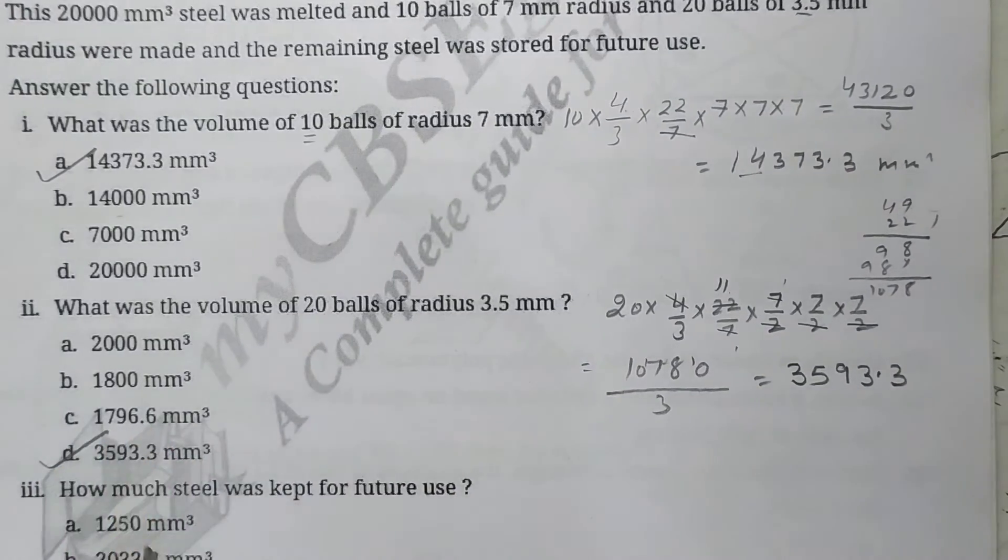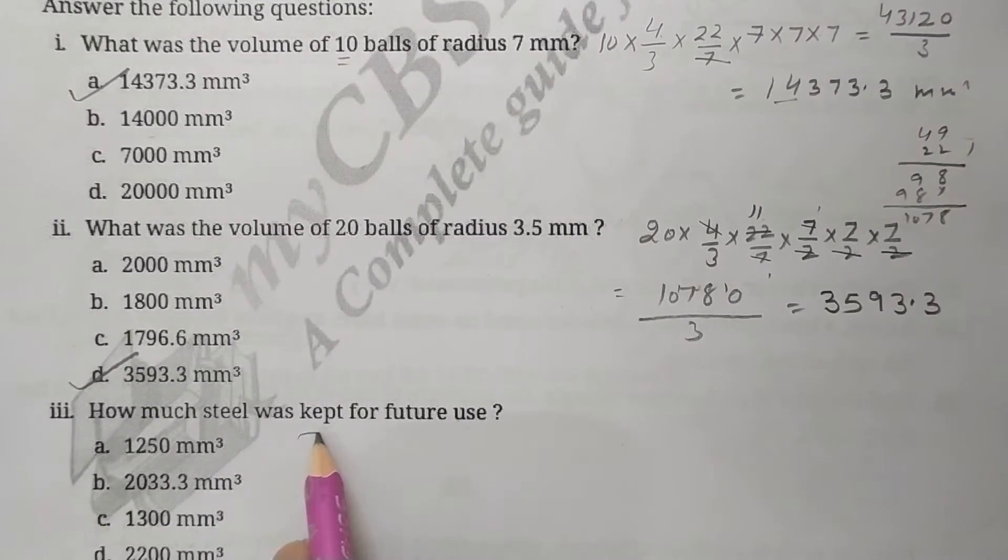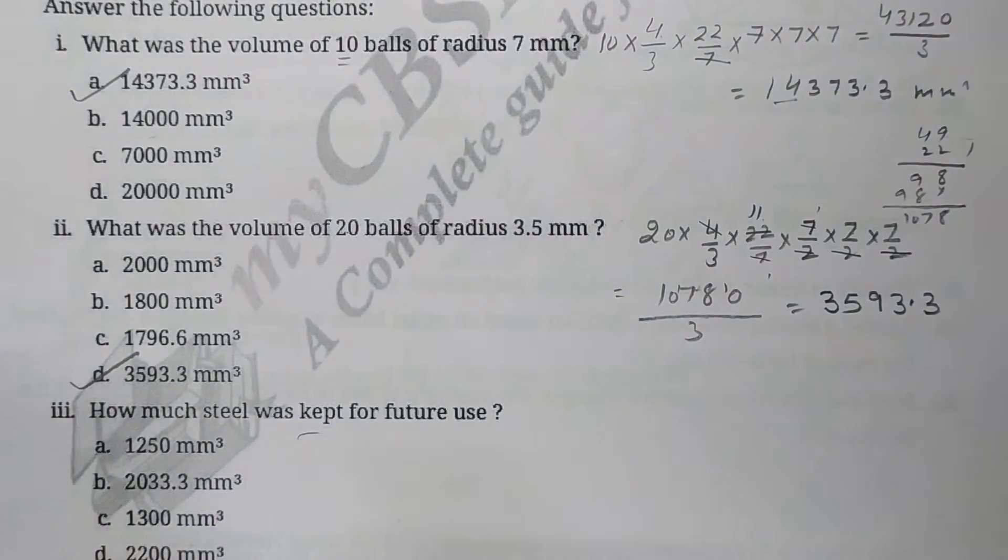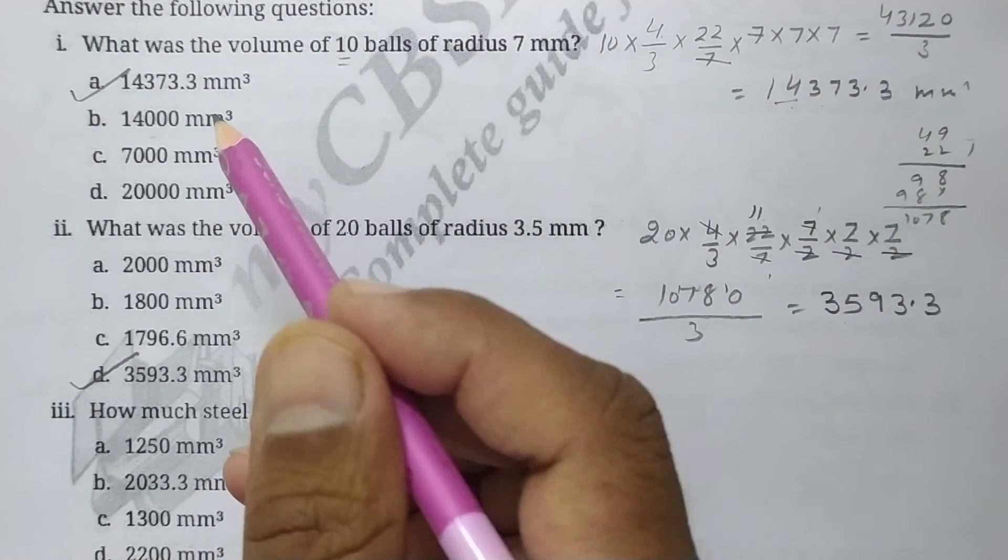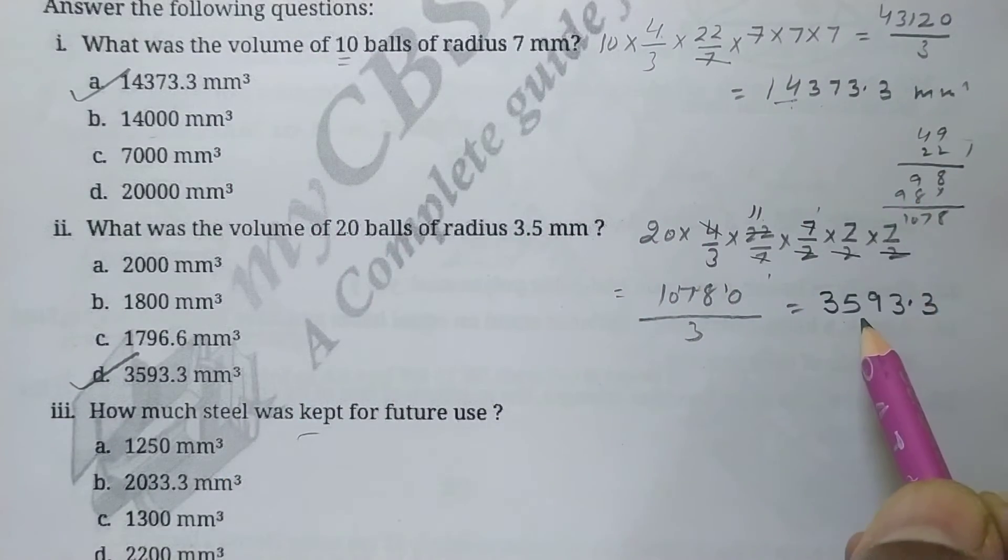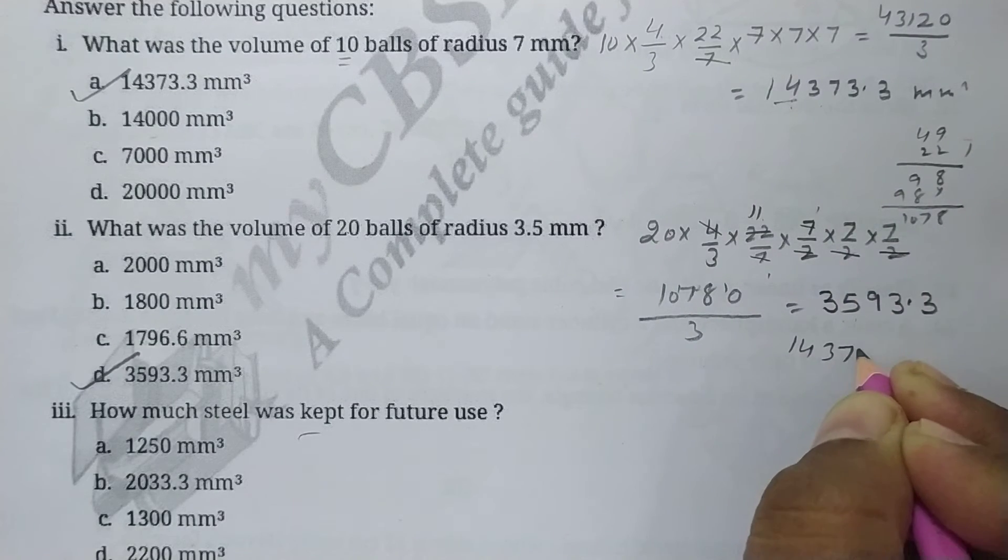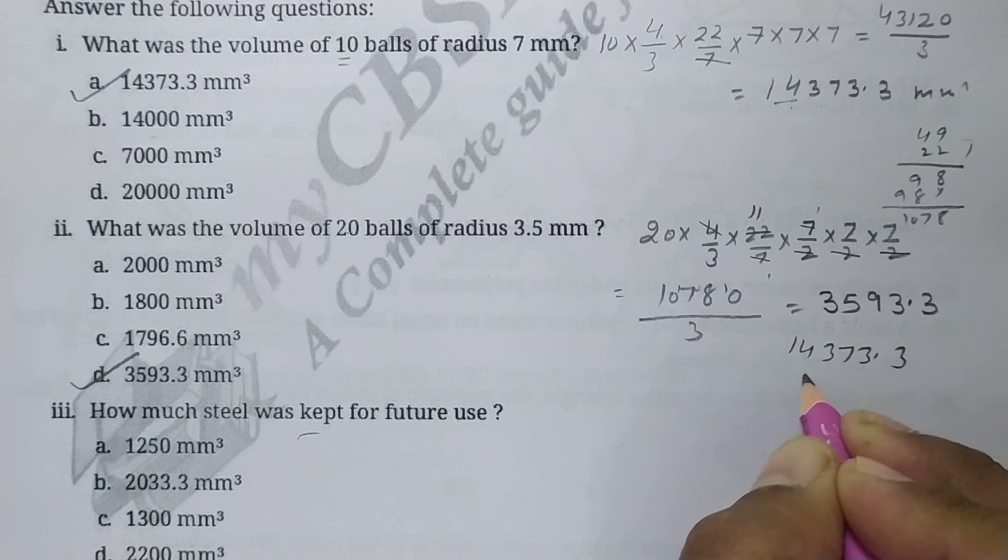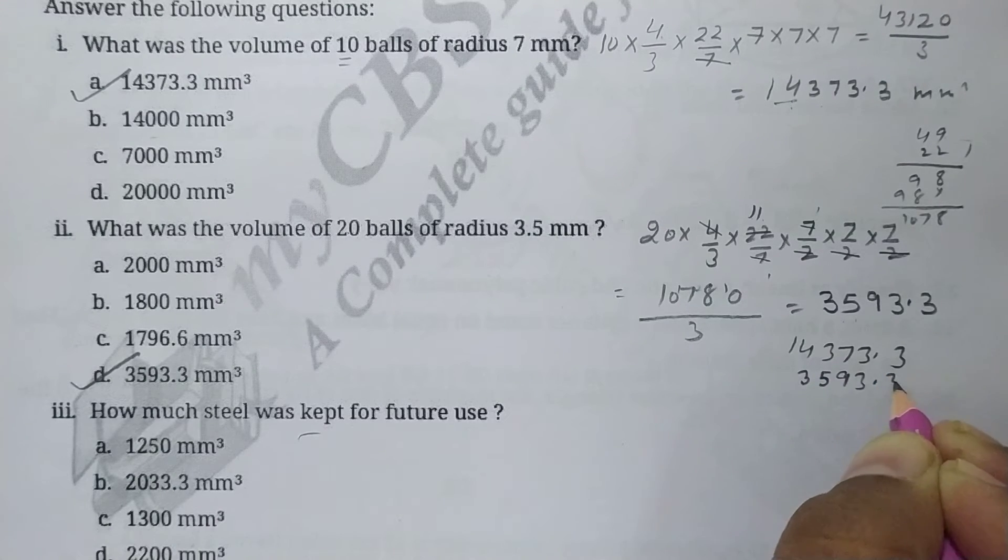So next is, how much steel was kept for future use? So whatever was used, subtract from 20,000. So see, this was used, this was used. So let's find the sum of these two first.